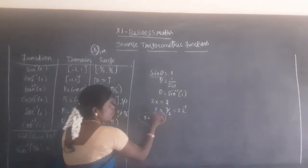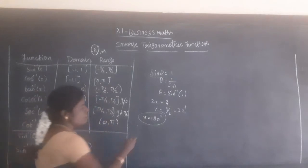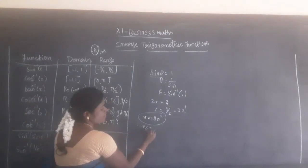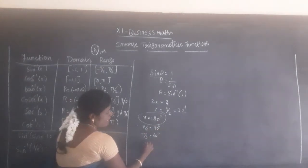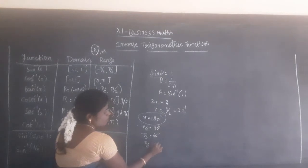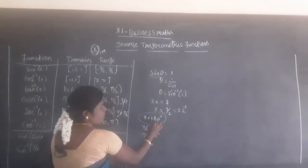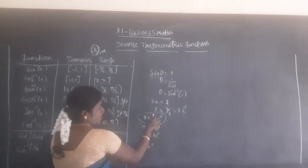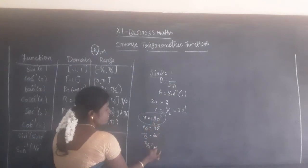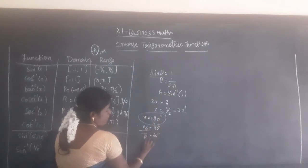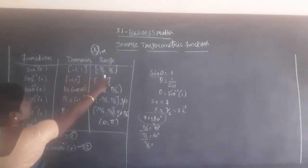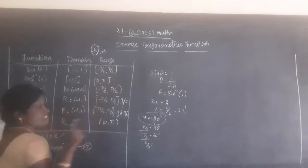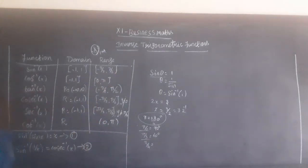For example: π by 2 equals 90 degrees. π by 3 equals 60 degrees. π by 4 equals 45 degrees. The values change accordingly: π by 2 gives 90, minus 90, plus 90 — these correspond to the range values of the inverse functions.